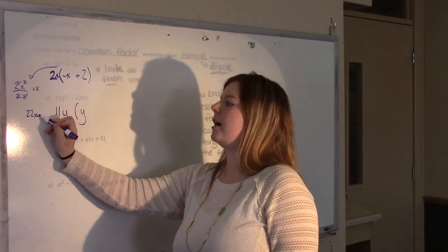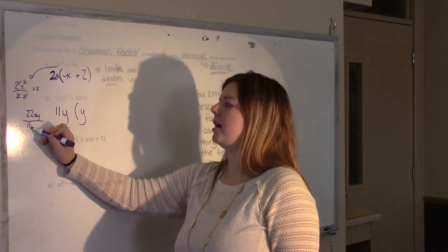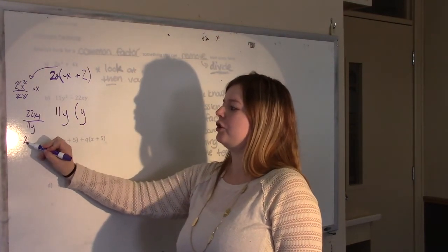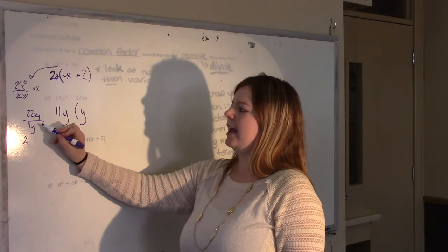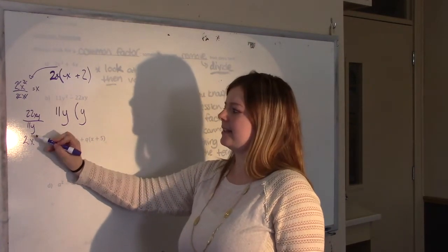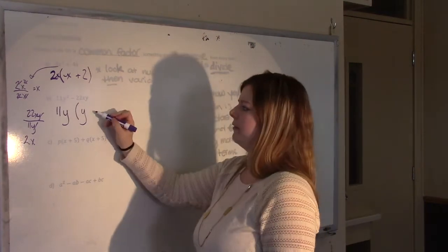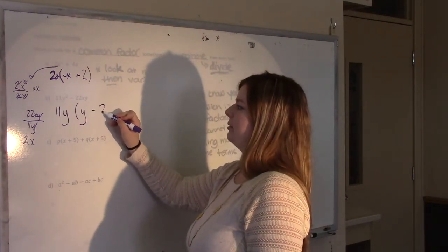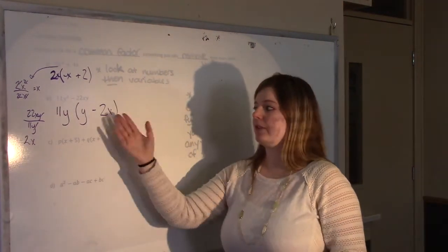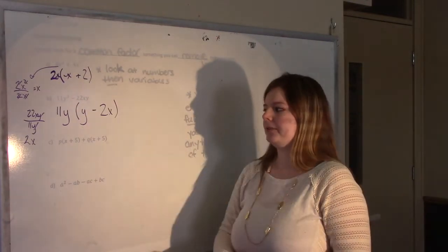When you do 22xy divided by 11y: 22 divided by 11 is 2, the y's cancel, and x stays as x, so you're left with minus 2x. So 11y² − 22xy factors to 11y(y − 2x). Again, you can expand it out and you'd get back to the original.